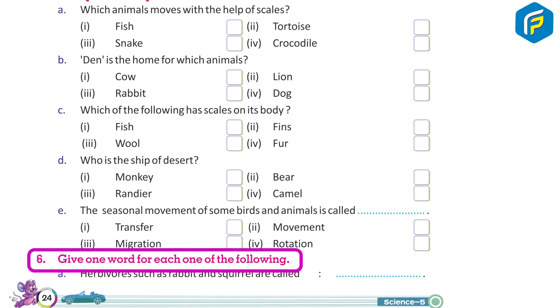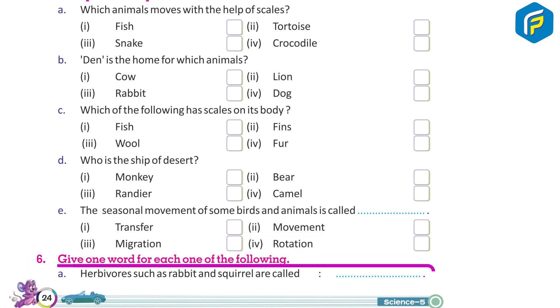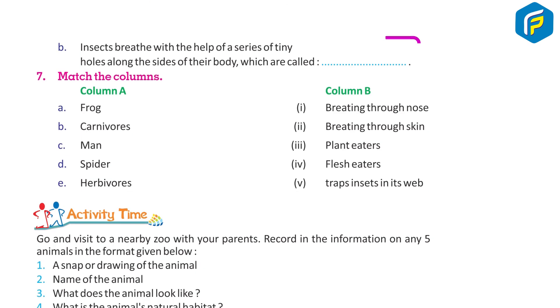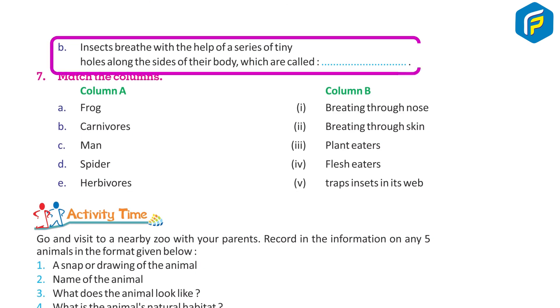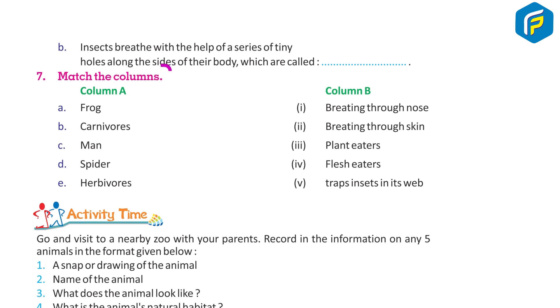Give one word for each of the following: A. Herbivores such as rabbit and squirrel are called ___. B. Insects breathe with the help of a series of tiny holes along the sides of their body, which are called ___.